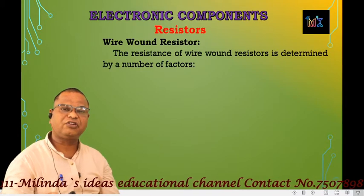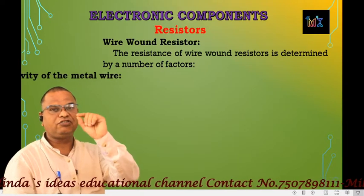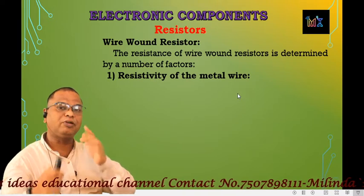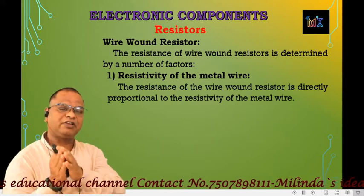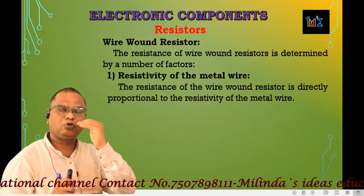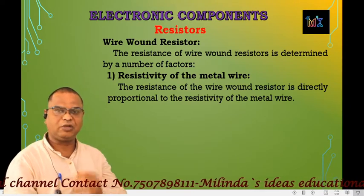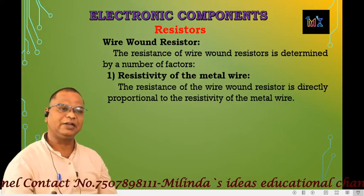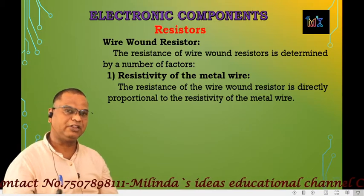The resistance of wire-wound resistors depends on three factors. The first factor is the resistivity of the metal wire. From the formula R equals rho L upon A, the constant rho is the specific resistance, also known as the resistivity of the material. Resistance is directly proportional to resistivity.